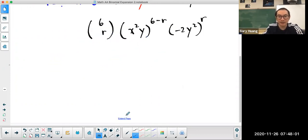I'm going to separate the coefficient from the variable. The coefficient is just 6 choose r. Here I don't have a coefficient, so I'm not going to worry about it. Here I have a negative 2, so it's negative 2 to the power of r. That's my coefficient.